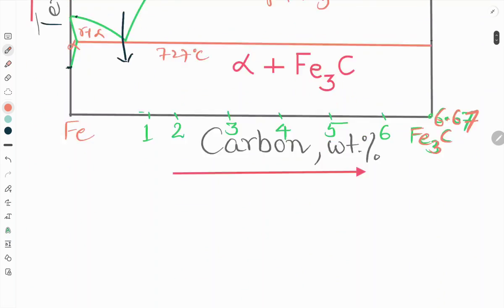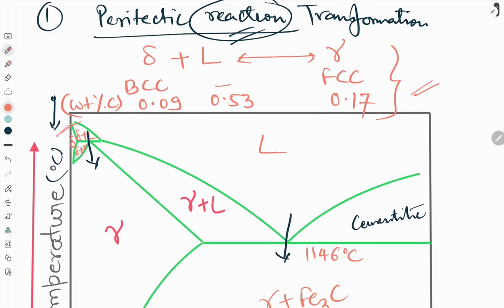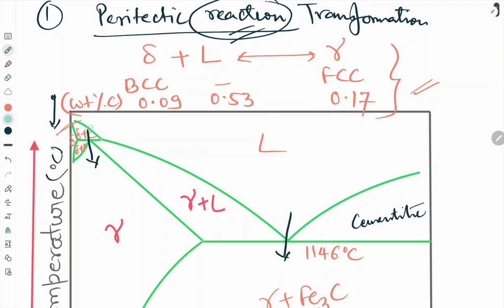You can see here that this zone delta plus L, delta plus L is giving gamma here. So this is 0.09, this one is 0.17, and this one is 0.53.